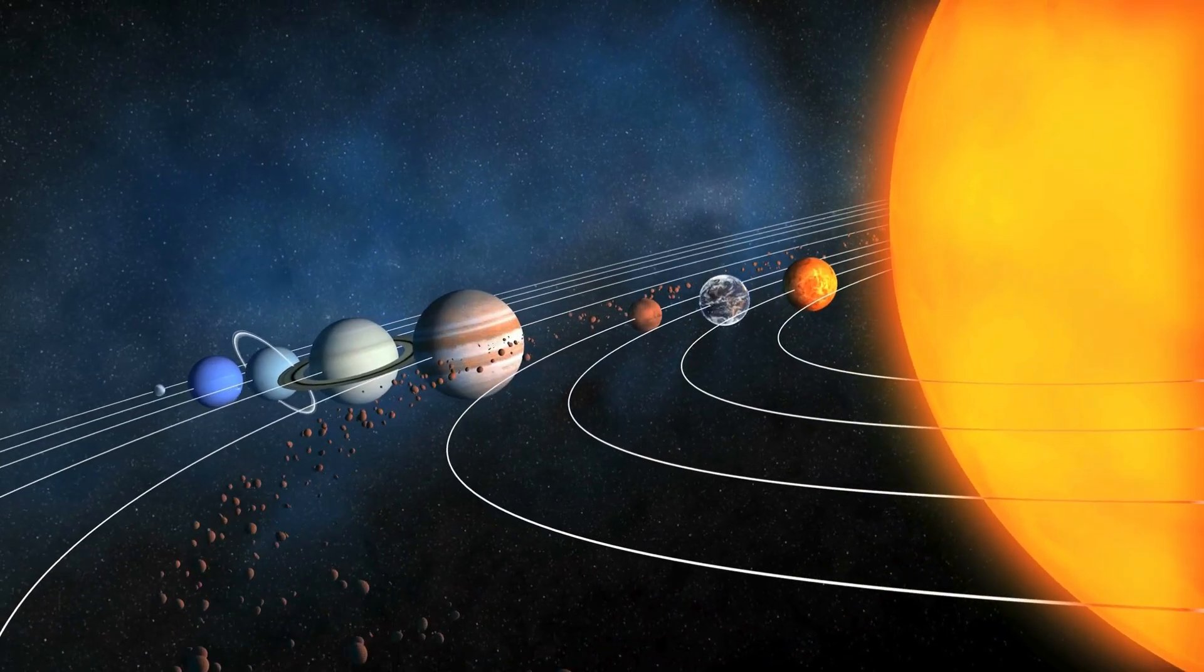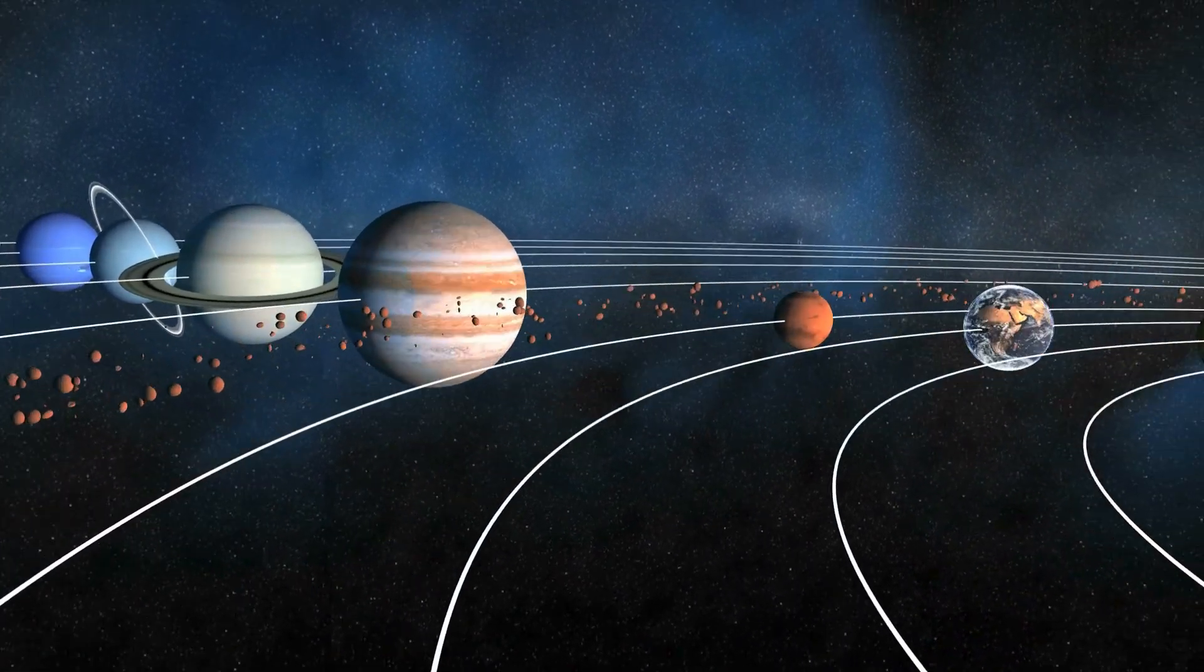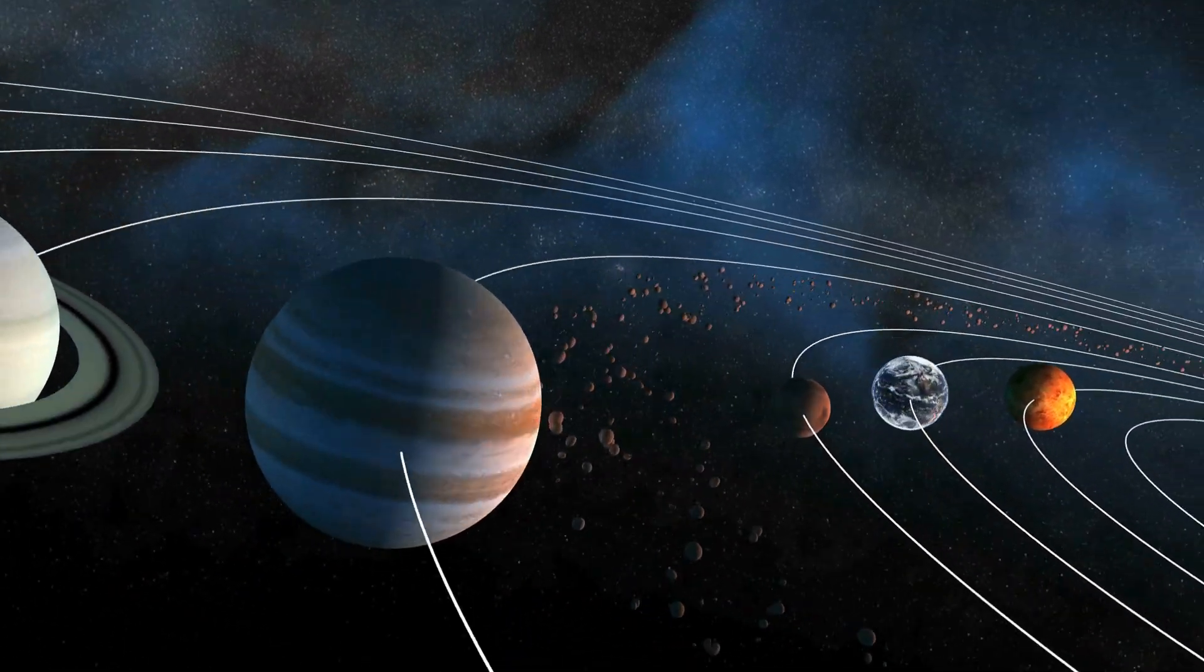Earth has a perfect atmosphere too, which is like a blanket of air around the planet that keeps us safe and helps us breathe. Also, Earth has a moon that lights up our night sky and helps create tides in the ocean.